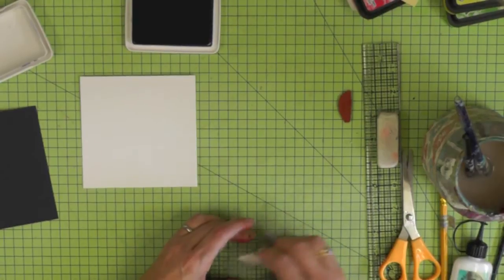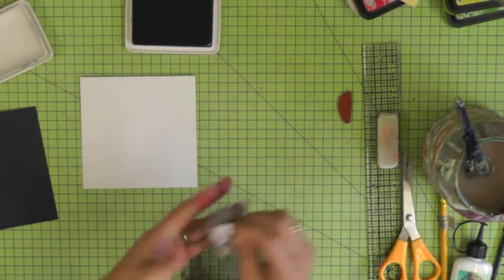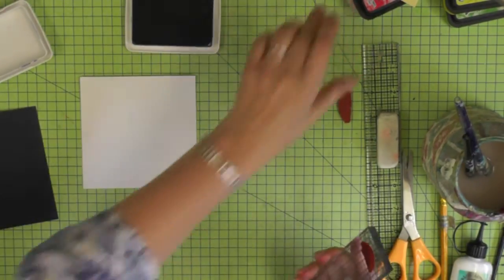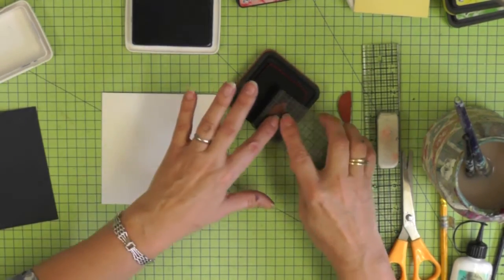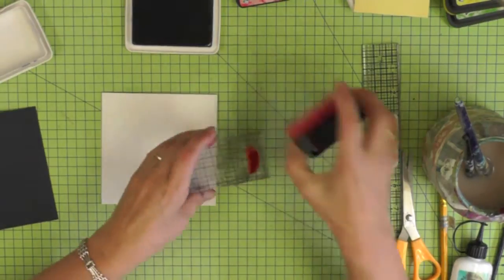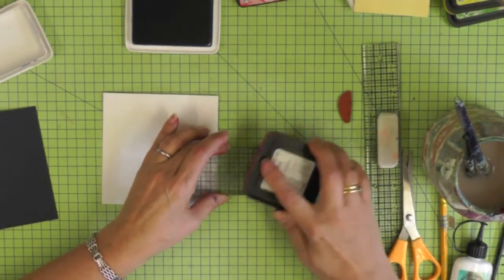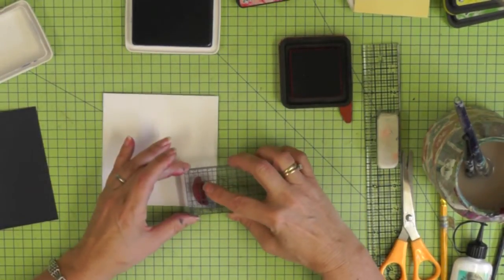We're using exactly the same techniques but just on a smaller scale. Just cleaning up my hands before I begin and we're going to take the smallest of the chili peppers and we're going to stamp that in the bottom right hand corner of the card.